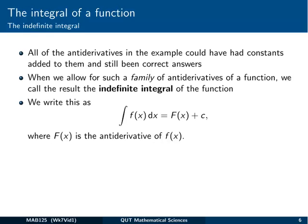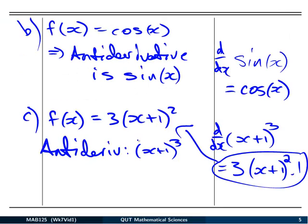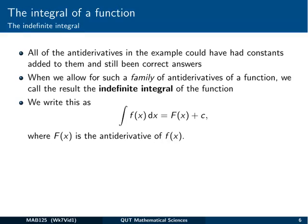Well it turns out any other number added to the end of these functions, our anti-derivatives, any other constant added to the end would still differentiate and give us the same functions. So think sin(x) + 2. If I differentiate that the 2 goes away and I still get cos(x). If I had (x + 1)³ + 407 for example, the derivative of 407 is 0, and I still hit back at f equal to that same function. So all of the anti-derivatives in the example could have had constants added to them and still been correct. Any constant in fact gives us a family of anti-derivatives of a function. And we call that result when we include the possibility of a constant the indefinite integral of a function.